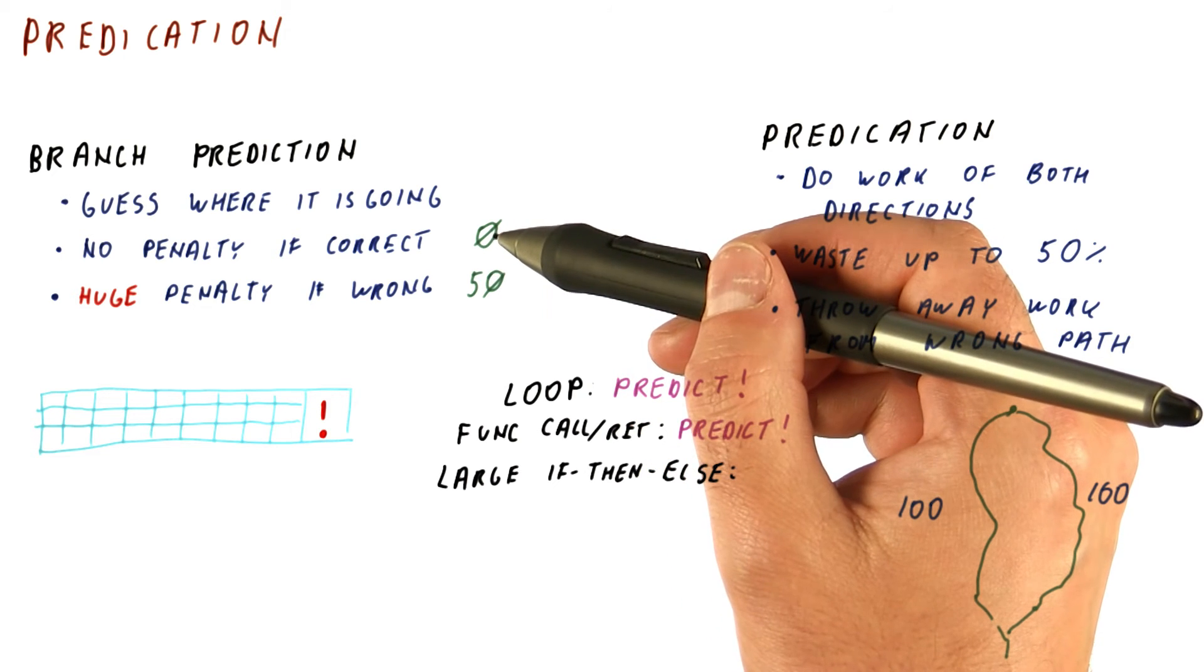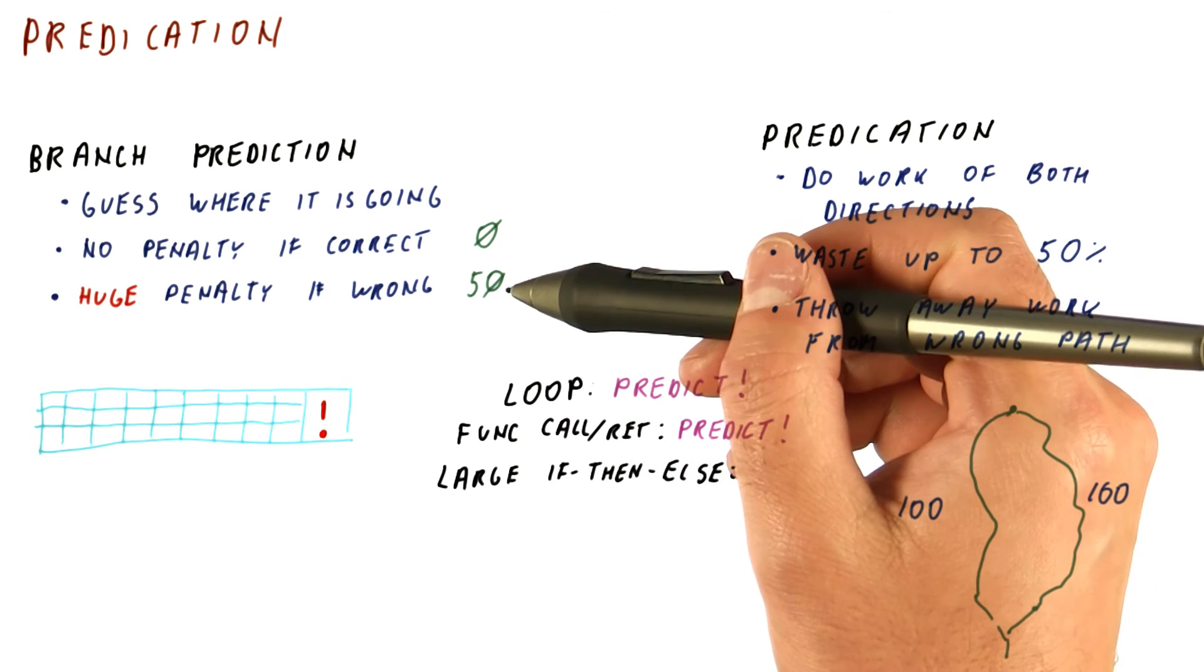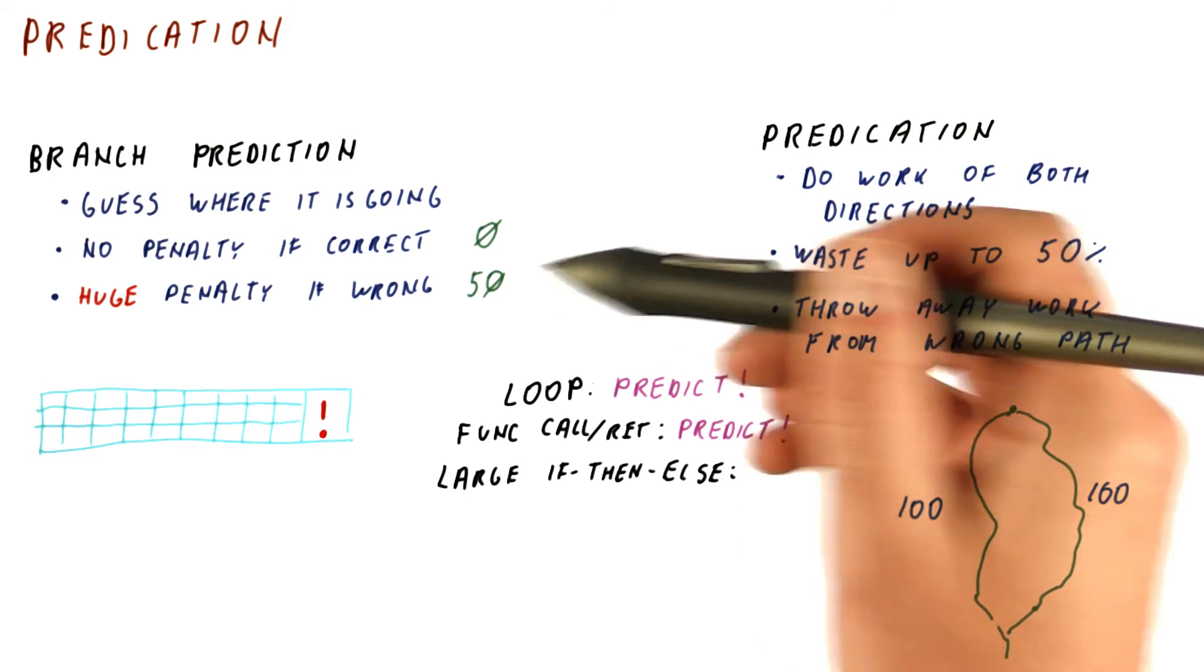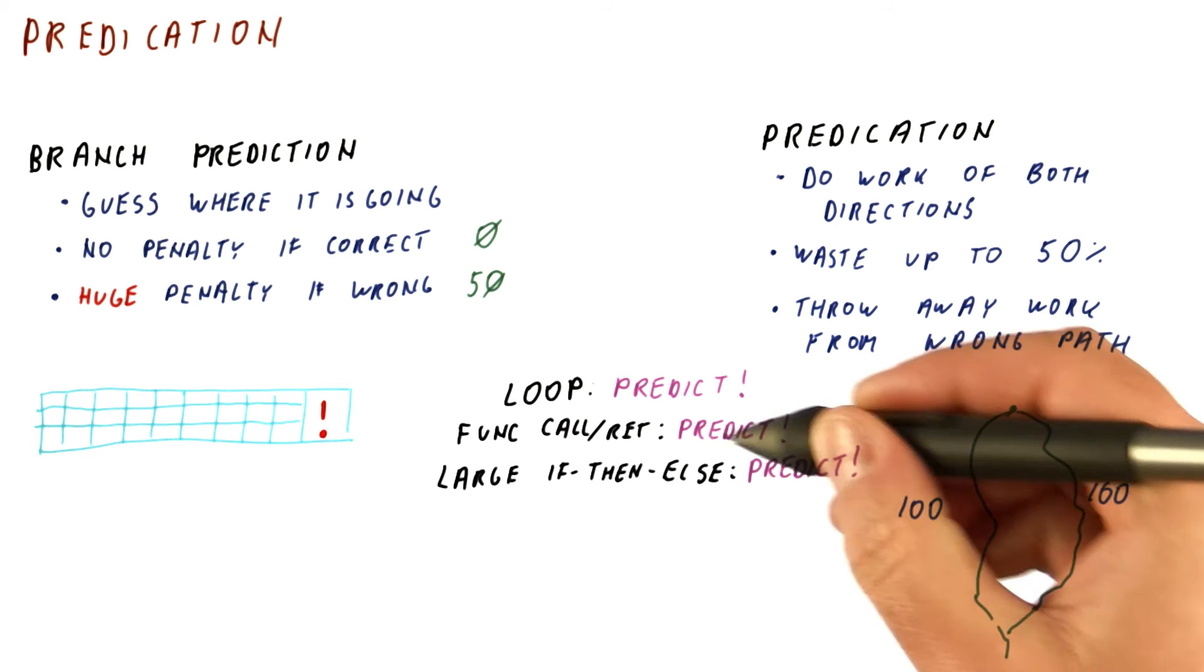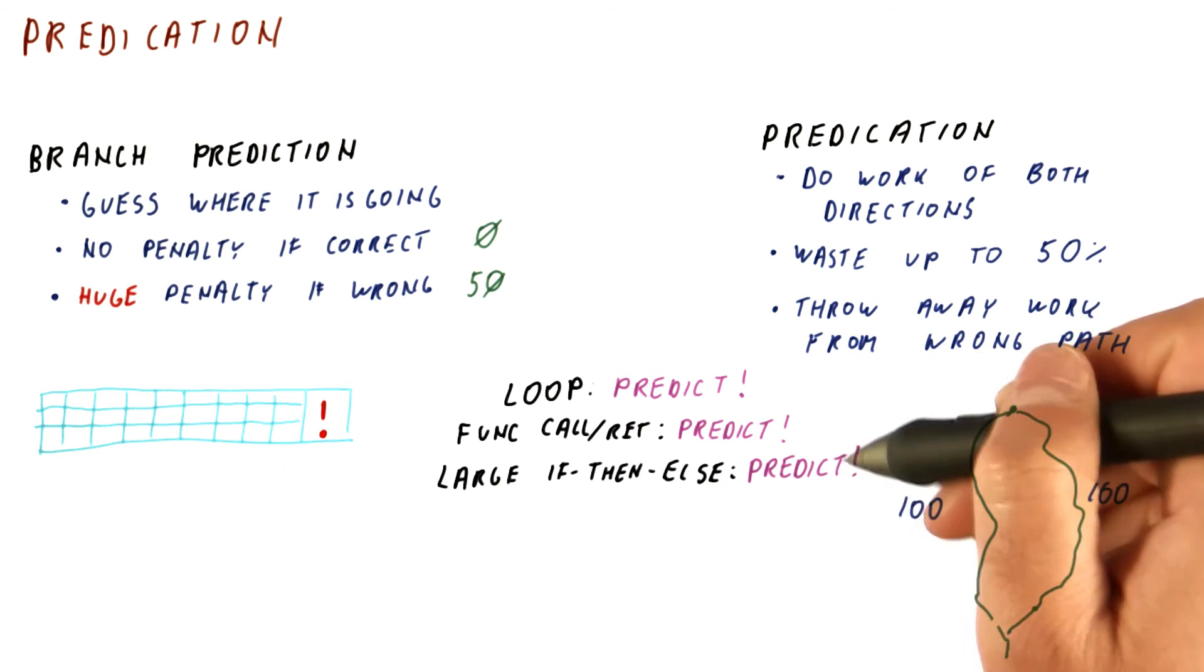Pretty much if we predict and we are right, we lose nothing. If we predict and we are wrong, we lose 50 instructions. Here we lose 100 instructions and we cannot be wrong or right, but either way we are losing 100 instructions. So for a large if-then-else, it seems like we should be predicting.